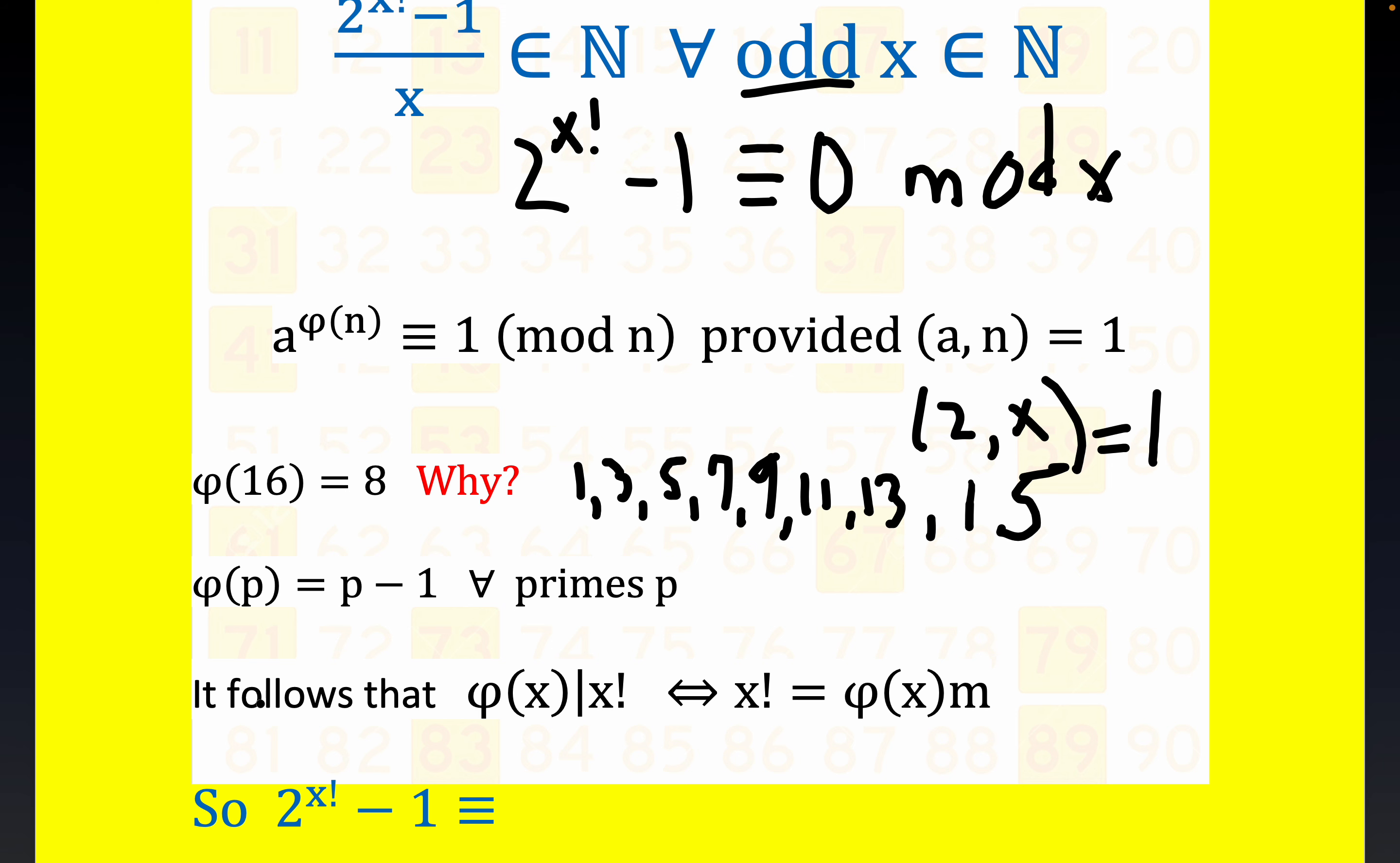Now, an important result here is that it's also true that φ of n is always going to be less than or equal to n minus 1. It's equal to n minus 1 in the event that n is prime. But you see what that means, you can see why φ of x would have to divide x factorial because it's going to be a value, an integer value that's less than x. And that certainly has to divide x factorial.